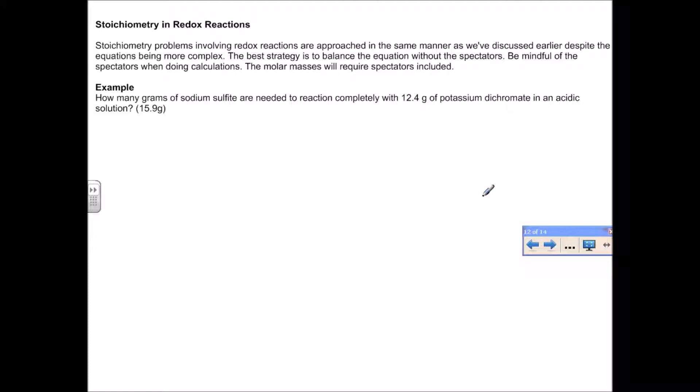In this reaction we've got sodium sulfite and potassium dichromate in acidic solution. The spectators are sodium and potassium. Sulfite converts to SO4²⁻ and dichromate converts to chromium ions. You need to balance this in acid, so I'd encourage you to pause the video and balance so you can practice that skill.